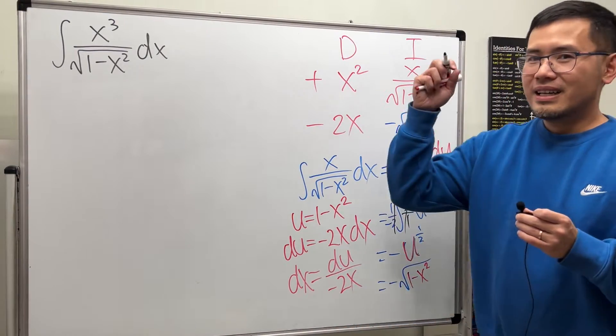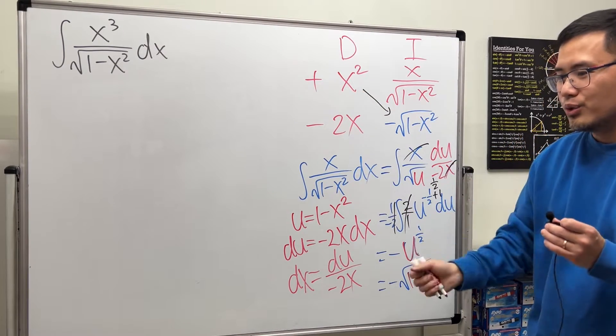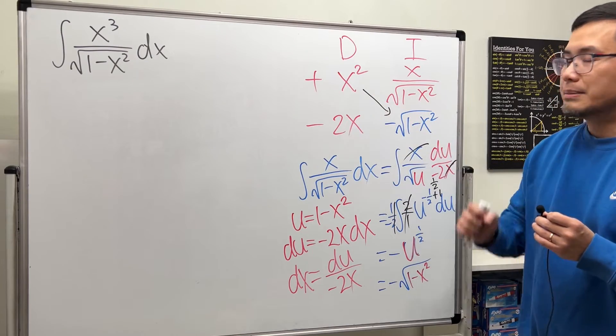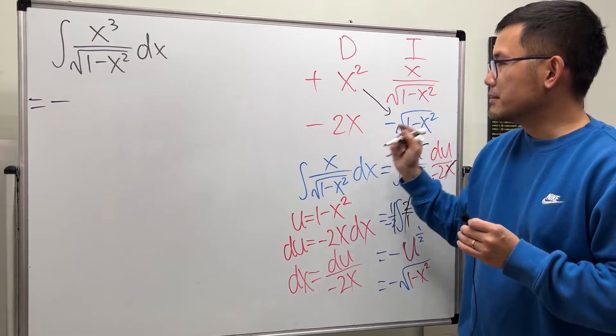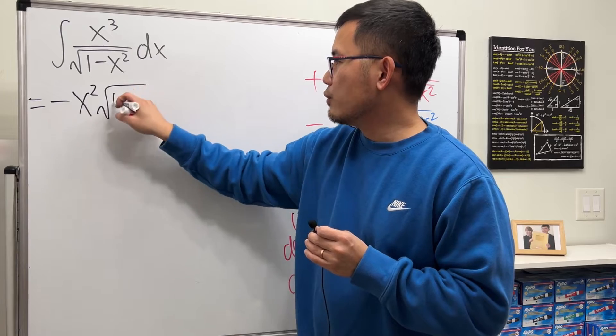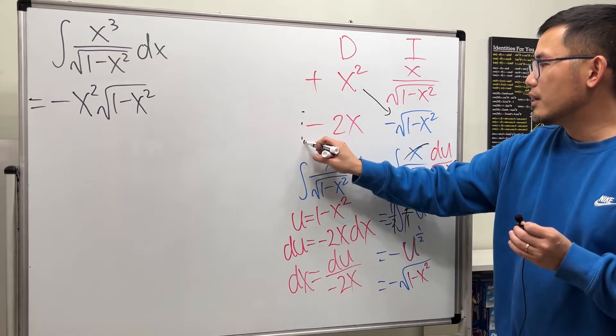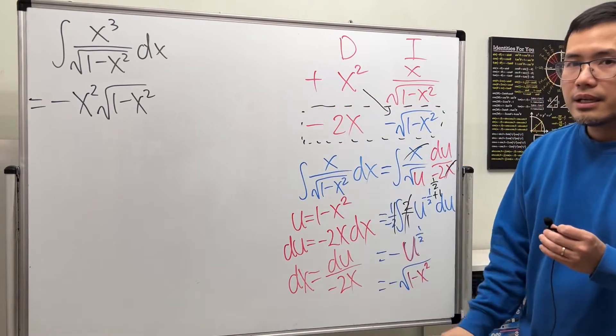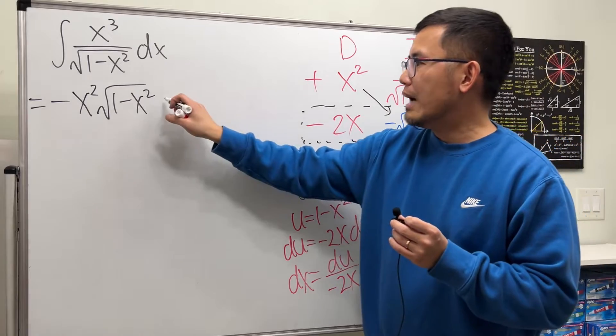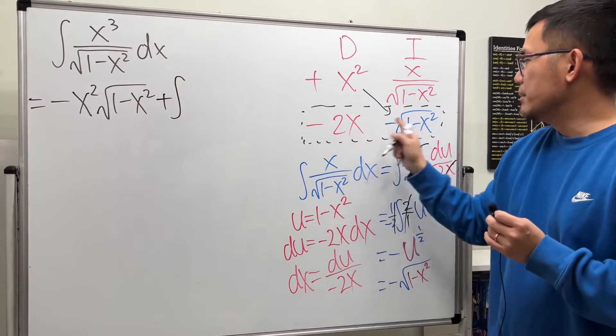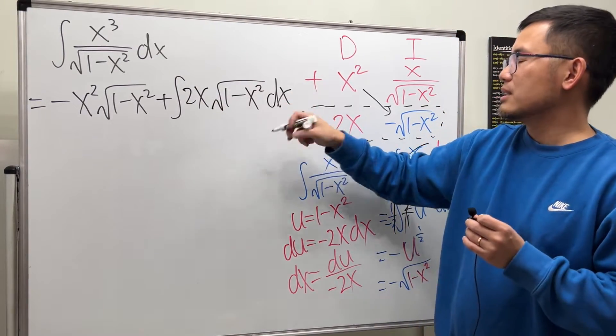So that being said, go ahead. Multiply this and that. It's the uv part from the traditional uv setup. That will be the first part of the answer. We will have a negative x squared times the square root of 1 minus x squared. Then we are going to multiply this and that and put that inside of an integral. And then just multiply the signs carefully. Negative times the negative, we have to add. We will have to add the next integral. We have 2x square root of 1 minus x squared dx.